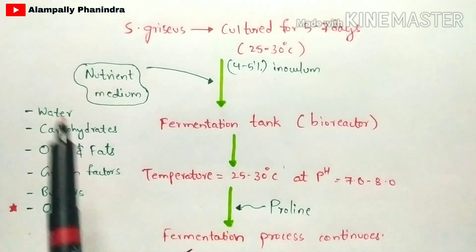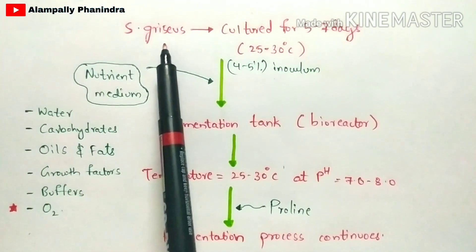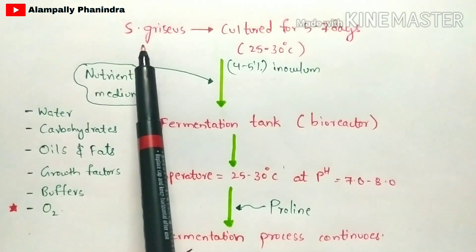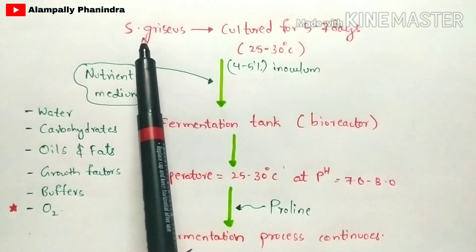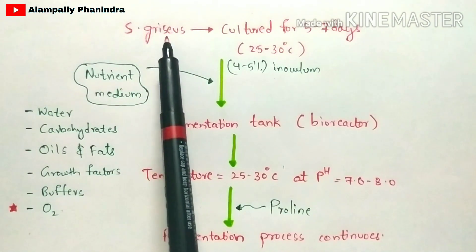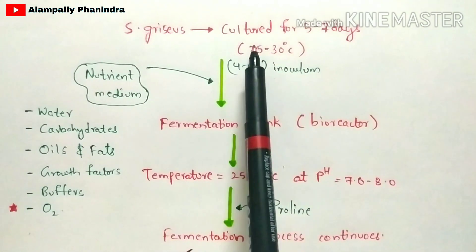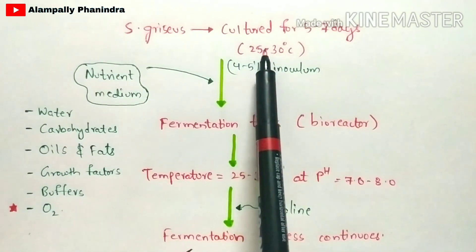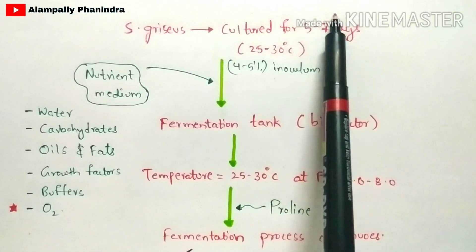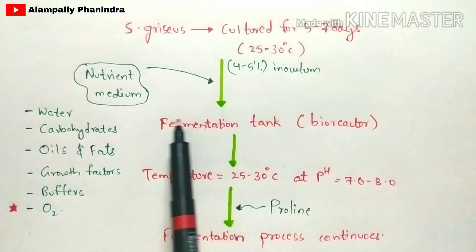The first step is to isolate Streptomyces griseus bacteria — written shortly as S. griseus. You are going to isolate this S. griseus and culture it for 5 to 7 days at a temperature of 25 to 30 degrees Celsius. This inoculum is then kept aside.